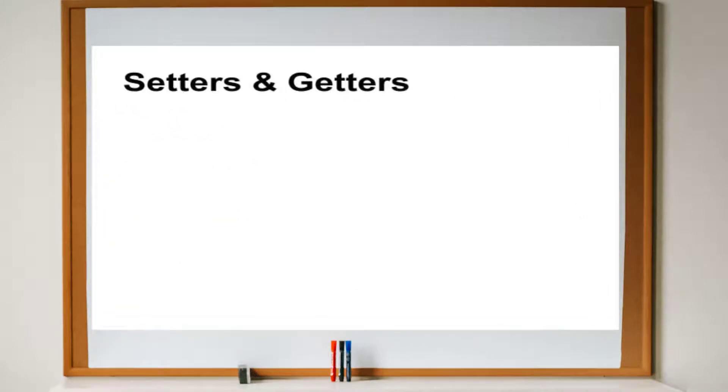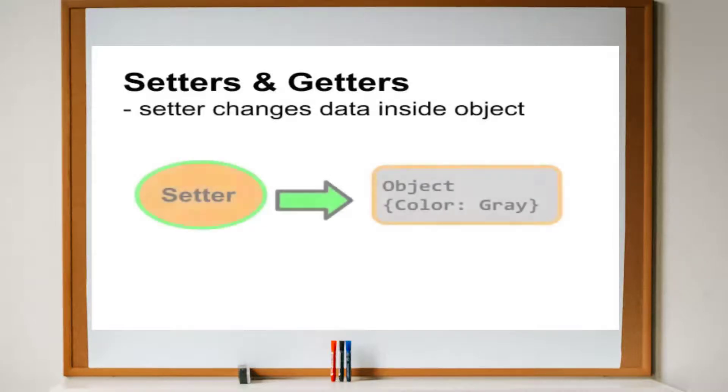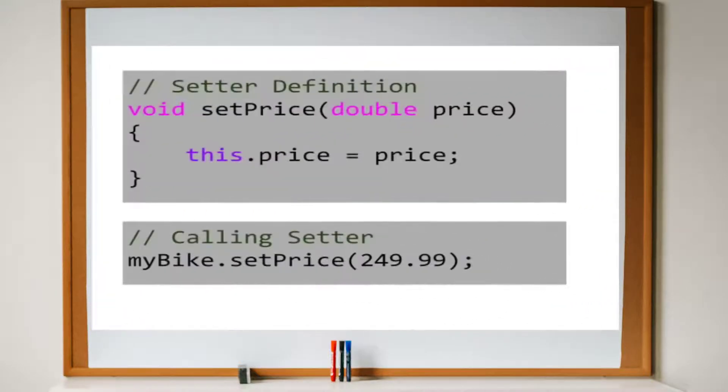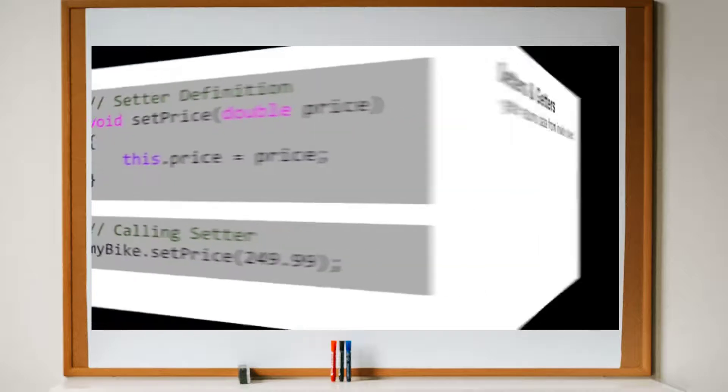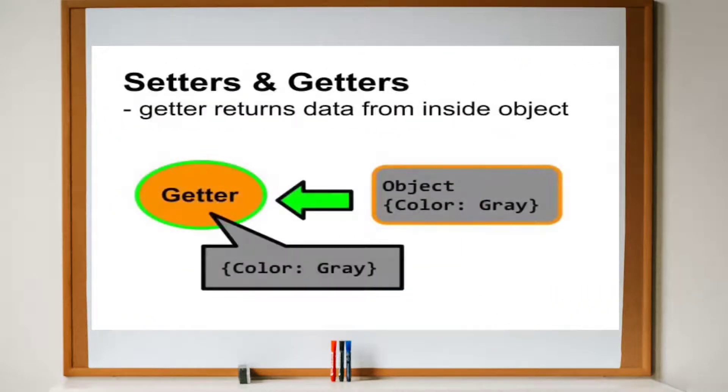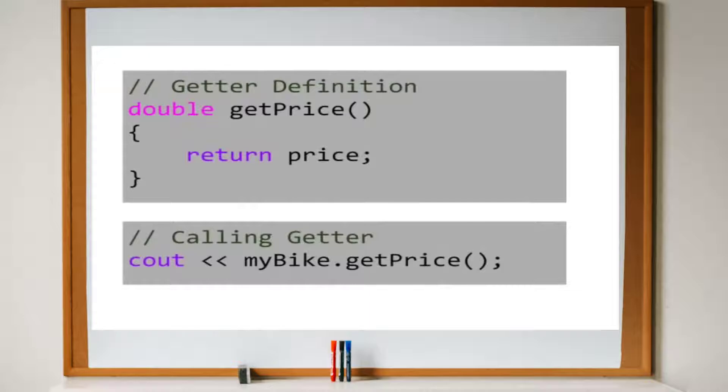Besides constructors and destructors, objects have two other kinds of methods, setters and getters. A setter is a method that changes the data attributes of an object. For example, setPrice will take a floating point number as a parameter and set the price variable to the value passed in. A getter method retrieves the data of an object. A getter doesn't change an object, but rather lets you peek inside of it. For example, we can give the bike class a method called getPrice that returns the value inside the price variable.